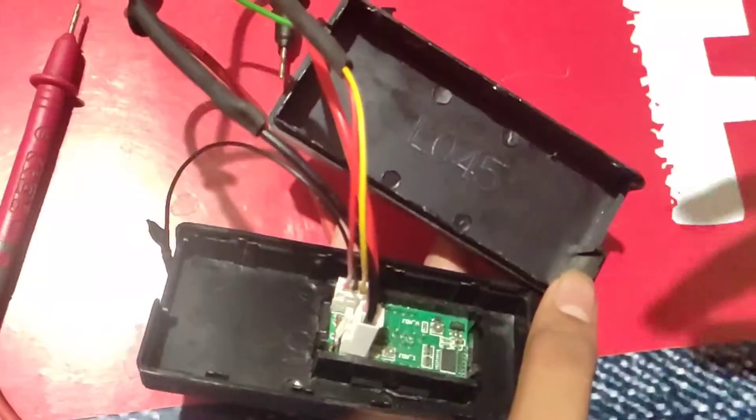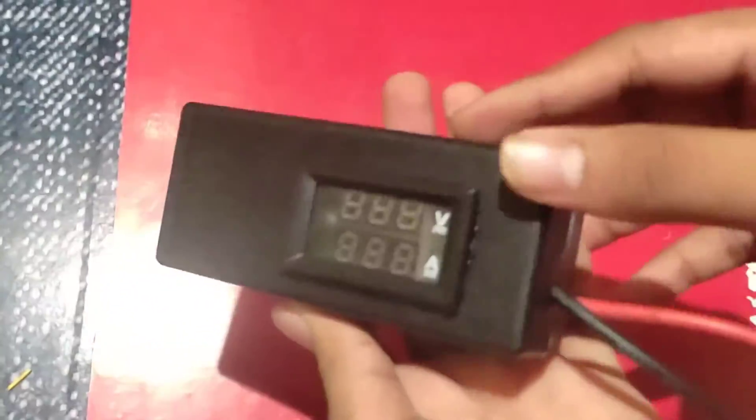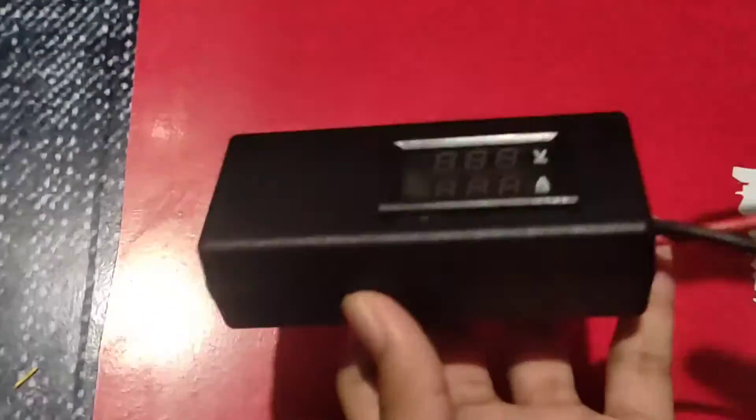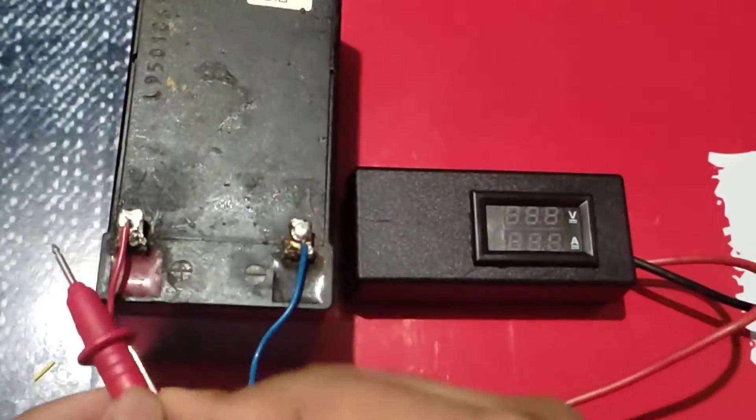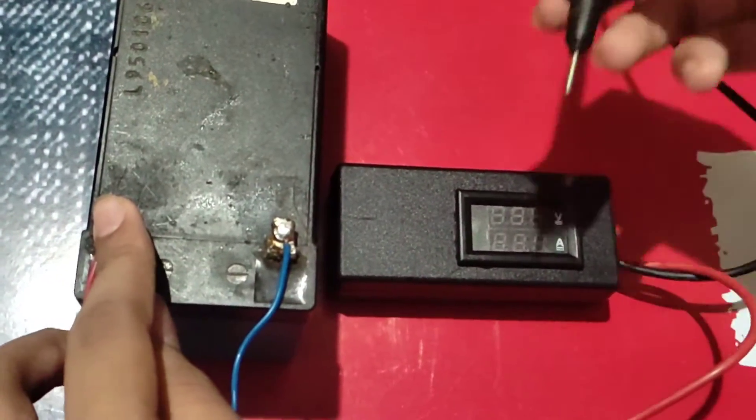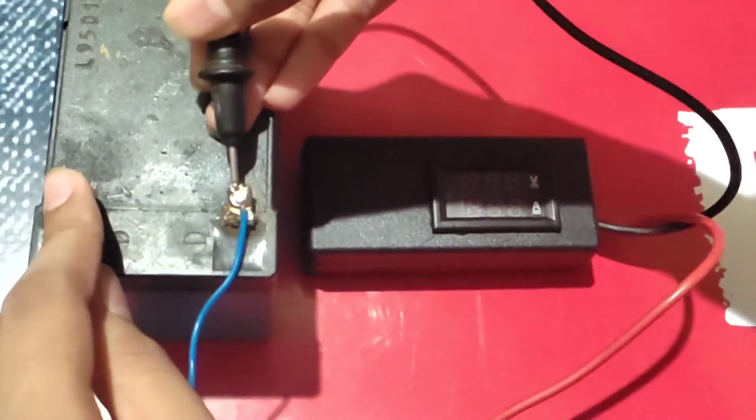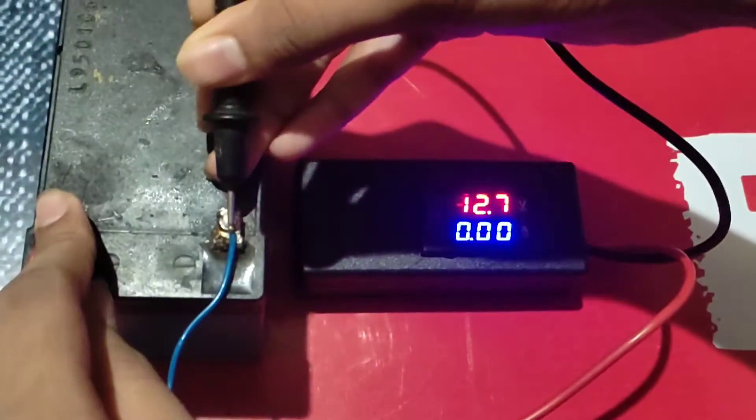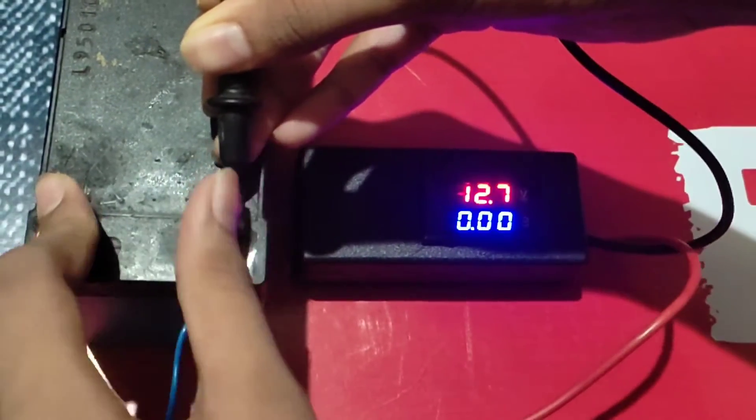You can see this is the meter and I fitted it in this box. Now we are going to test this. I connected the wires to the battery, it's showing the voltage 1.7 you can see.